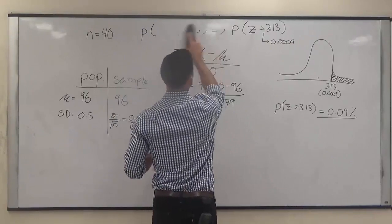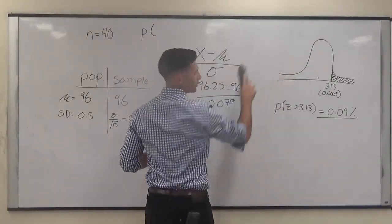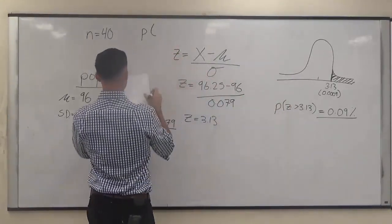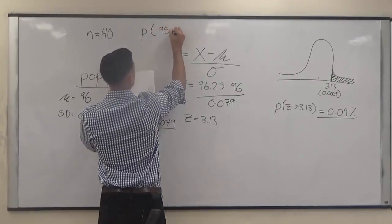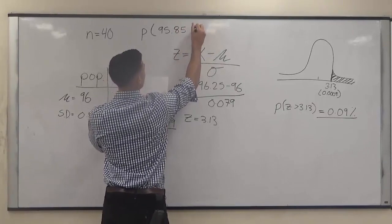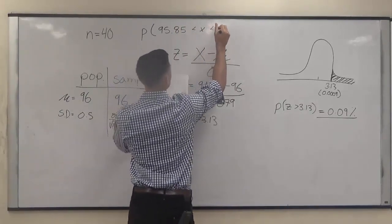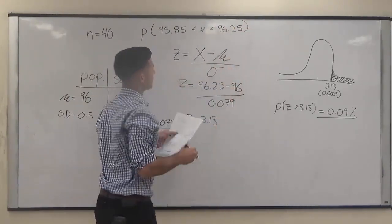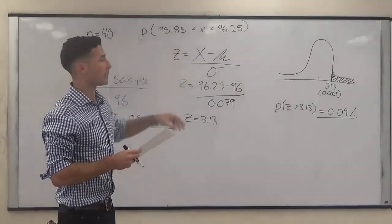However, we're now looking for the probability that x is between the two. So we're looking for the probability 95.85 inches is less than x, which is less than 96.25 inches. The probability that we fall in between those two lengths.